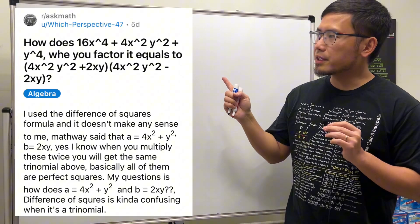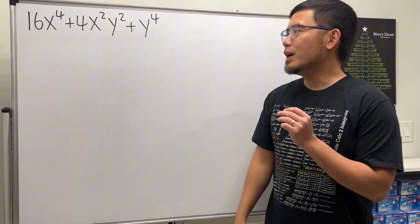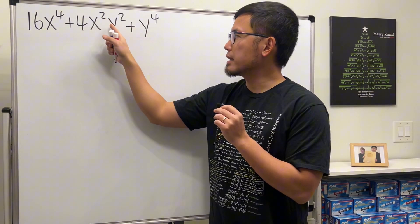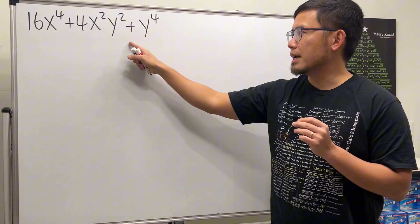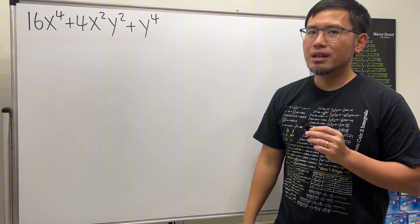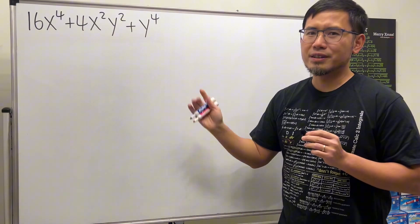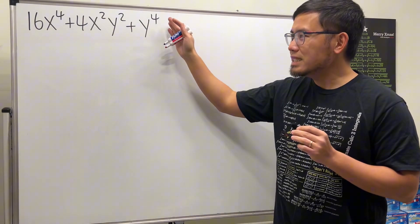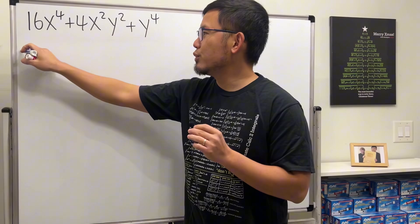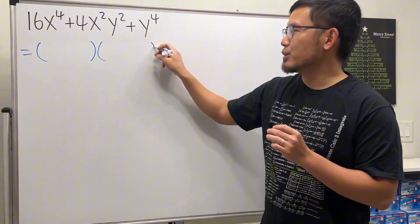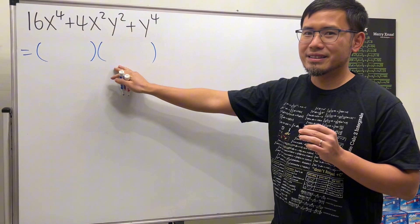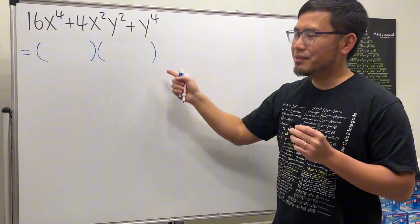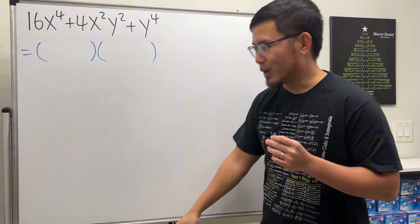Today let's take a look at this factoring equation from Reddit. We are going to factor 16x to the fourth power plus 4x squared times y squared plus y to the fourth power. This is a pretty hard factoring equation, but it is possible to factor it and get two factors that multiply together. Your answer should look like this at the end.